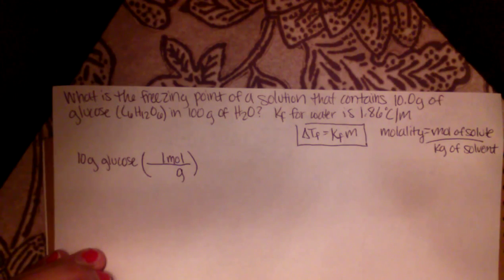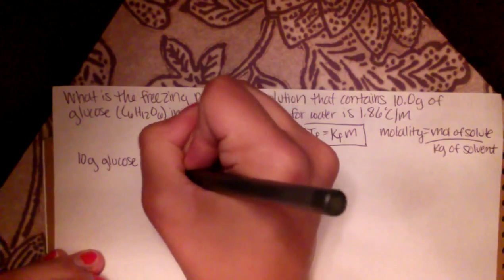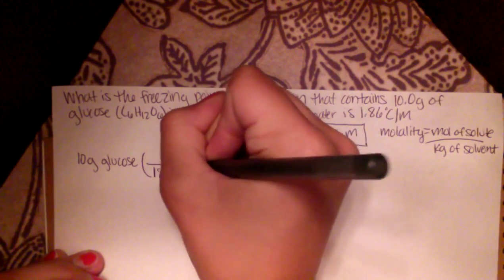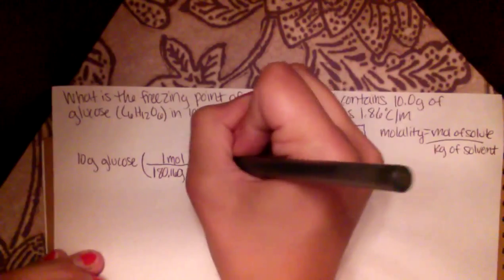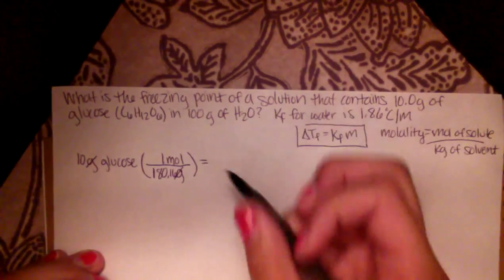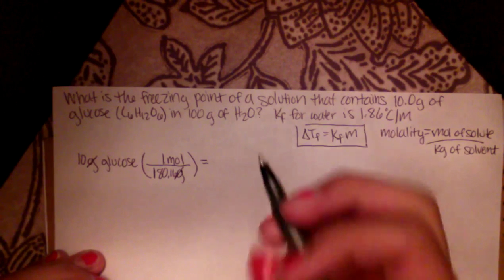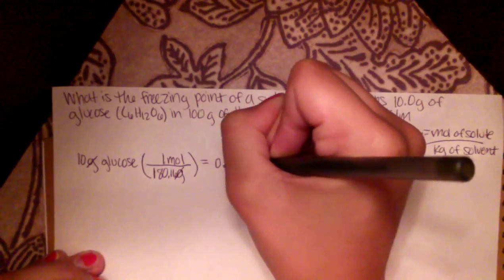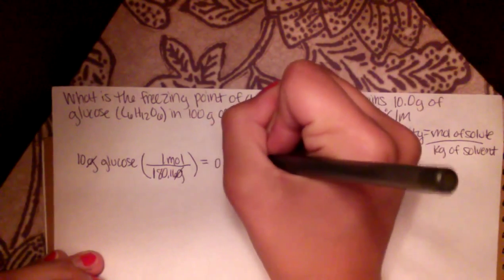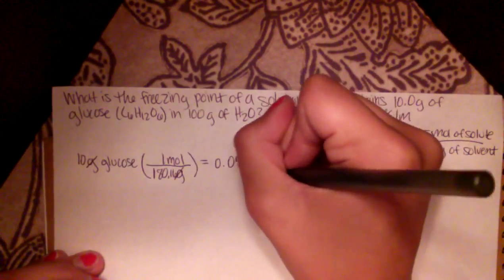And the molar mass of glucose is 180.16 grams. So when you do that, the way you set it up, you can cancel your grams and you'll get moles. So when you multiply this problem right here, you will get 0.056 moles of glucose.